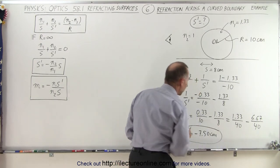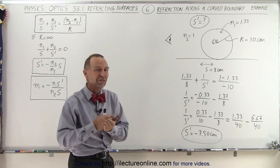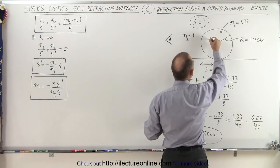So what does that mean? Well, the negative means that the image is on the same side as the object, and that it's 7.5 centimeters away from the boundary, which means that the image is just a little bit closer.